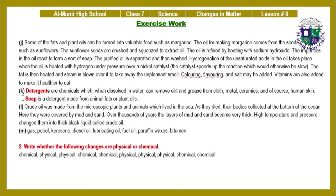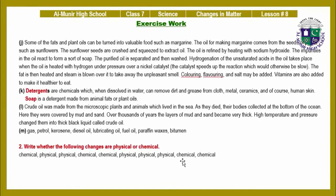Part K — Detergents are chemicals which, when dissolved in water, can remove dirt and grease from cloth, metals, ceramics, and human skin. Soap is a detergent made from animal fats or plant oils. Part L — Crude oil was made from the microscopic plants and animals which lived in the sea; as they died, their bodies collected at the bottom of the ocean, covered by mud and sand. High temperature and pressure changed them into crude oil. Part M — fractions: gas, petrol, kerosene, diesel oil, lubricating oil, fuel oil, paraffin waxes, bitumen. Question 2 answers: chemical, physical, physical, chemical, chemical, physical, physical, physical, chemical, chemical.